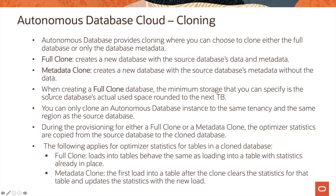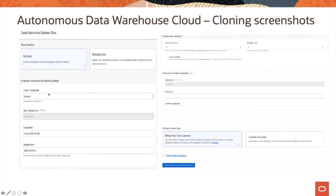You can only clone an autonomous database instance to the same tenancy and the same region as the source database. During provisioning for either a full clone or a metadata clone, the optimizer statistics are copied from the source database to the clone database. For a full clone, loads into tables behave the same as loading into a table with statistics already in place. For a metadata clone, the first load into a table after the clone clears the statistics for that table and updates them with the new load.